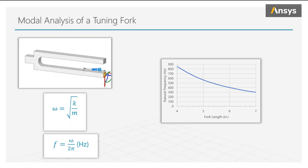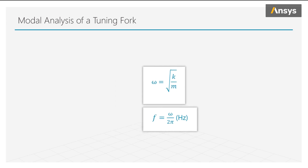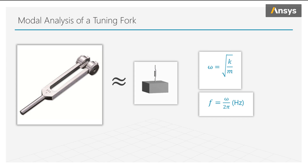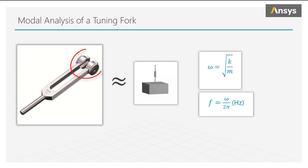Now we ask the question: what happens if we were to add weight to the tips of the fork? Again, thinking of the tuning fork as a cantilever beam, it acts like a spring. A longer beam is softer, a shorter beam is stiffer. Now putting a mass on the tip of that beam, or spring, we see from our equation that if we increase the mass, the resulting frequency will decrease.